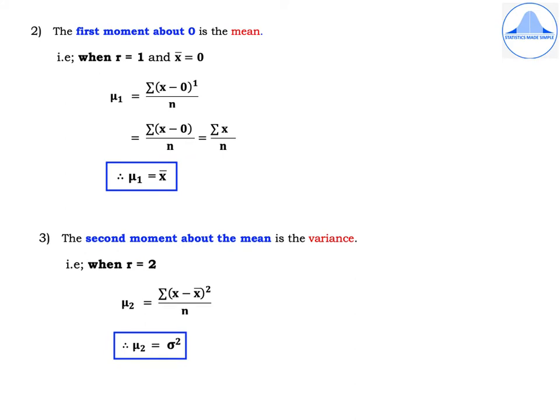The first moment about 0 is the mean. When we put r = 1 and x̄ = 0 in the central moment formula, we get μ1 = Σ(x − 0)^1 / n = Σx / n. We know that Σx / n is the formula for the arithmetic mean of raw data, so μ1 = x̄.